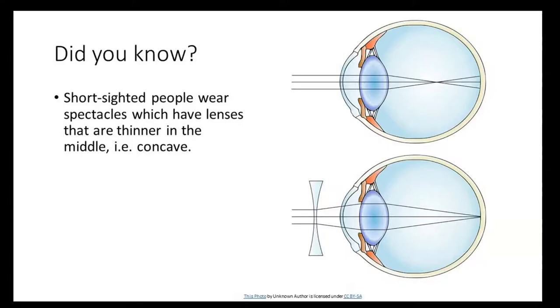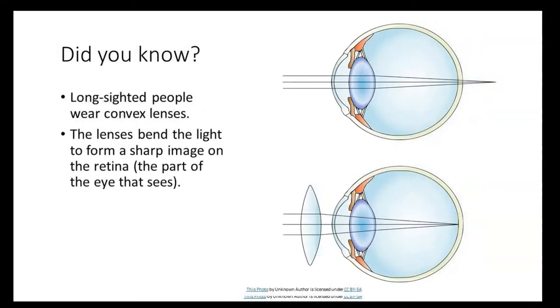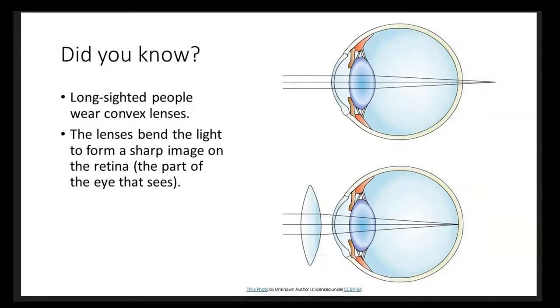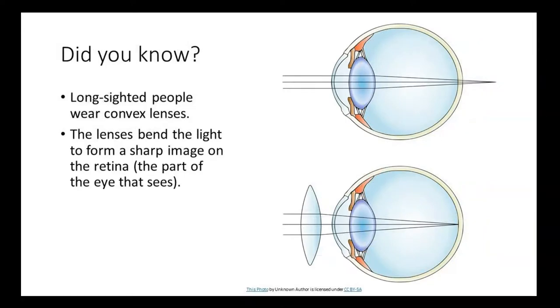Short sighted people wear spectacles which have lenses that are thinner in the middle, i.e. concave. Long sighted people wear convex lenses.